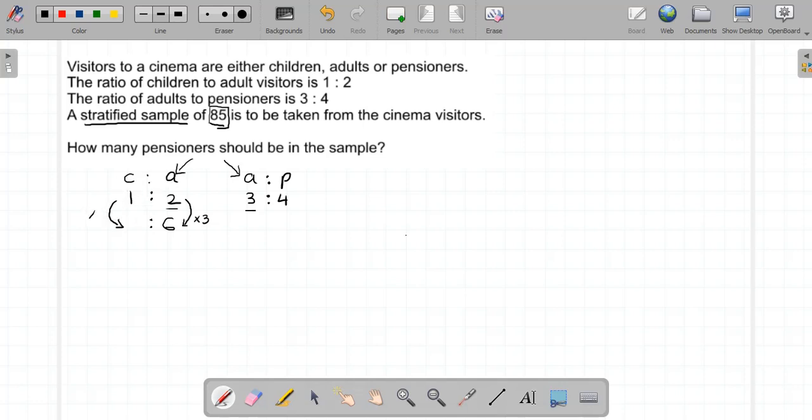And here I'm going to multiply this ratio by 2, so that becomes 6. But to maintain the equivalence, multiply by 2 as well... oops, what a mistake... 6 to 8.